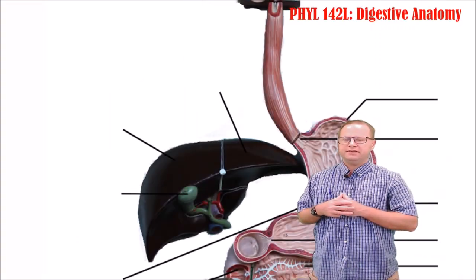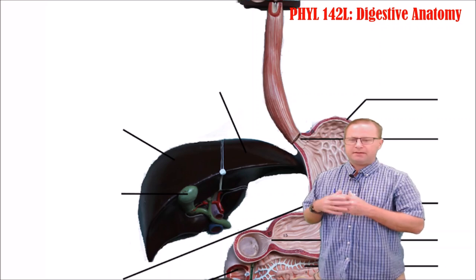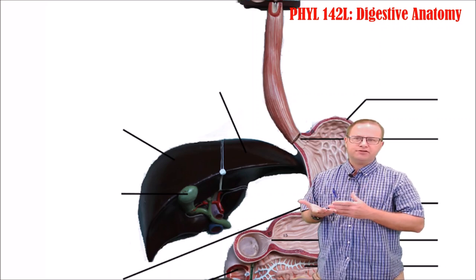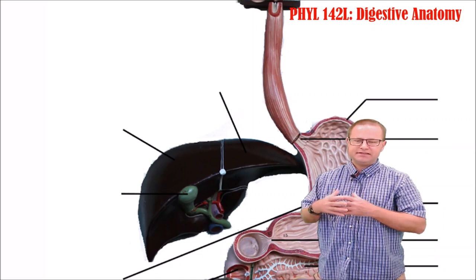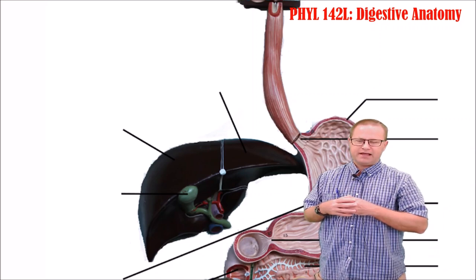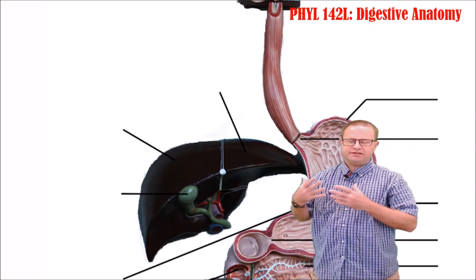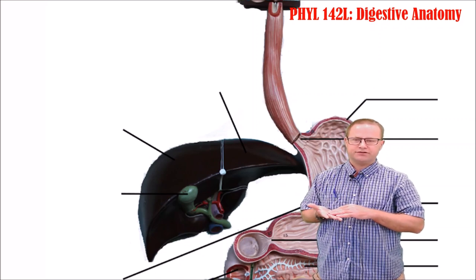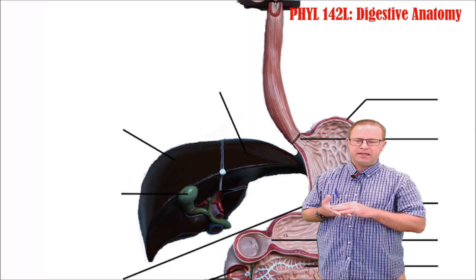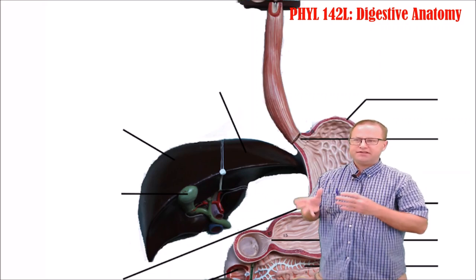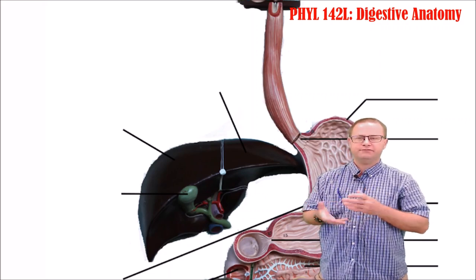Before we get to the small intestine, let's look at the macroanatomy of the liver. The liver is an important accessory organ of the GI tract. It doesn't actually handle food per se, but it helps to convert molecules that come from the GI tract — for example, if you eat too much carbs, it can convert that into fat, and vice versa.